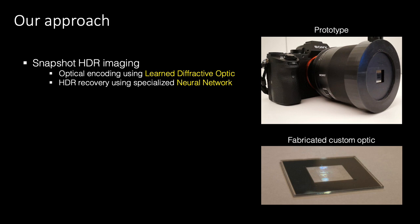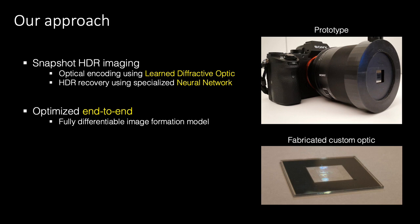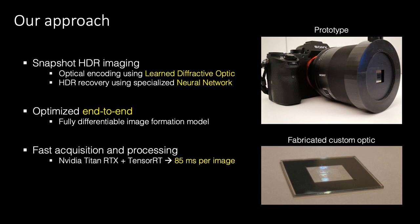We address this open problem by proposing a snapshot HDR imaging technique. Our method performs optical encoding using a learned diffractive optic and recovers the latent HDR image using a specialized reconstruction network. Both the optic and the network are optimized end-to-end using a fully differentiable image formation model. Our method allows for fast HDR acquisition and processing — using TensorRT optimization and running on an NVIDIA TITAN RTX, we are able to process at 85ms per image.